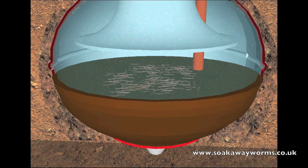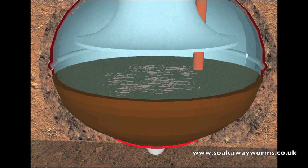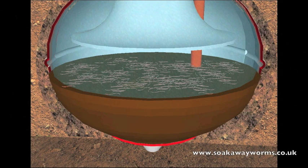Once in the tank the soakaway worms will fall to the bottom of your septic tank and land on the sludge. Very quickly they'll start to eat, breed and multiply. As they do so they'll start burrowing, churning and working their way through all the solid and the sludge.